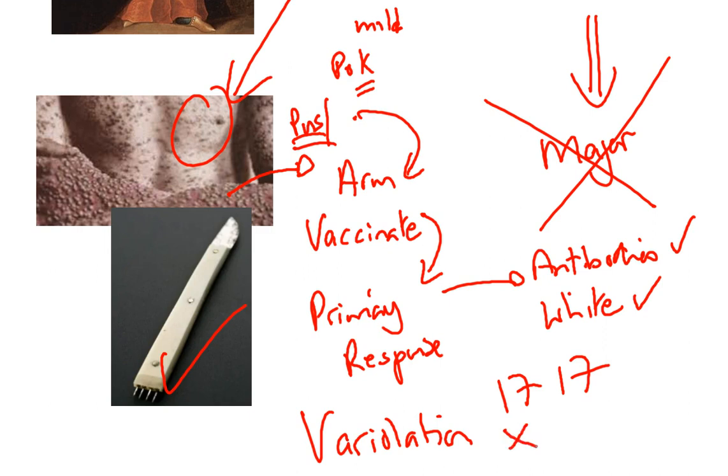Therefore, it was later, after Montague's death, that Edward Jenner introduced the process which we properly know as vaccination, which replaced variolation.